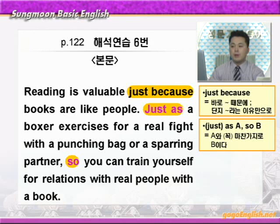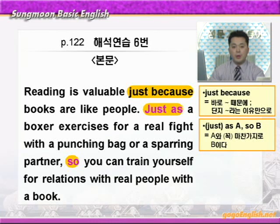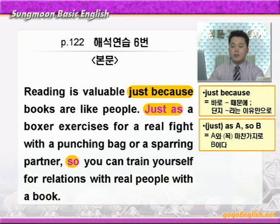'with a punching bag or a sparring partner' — punching bag은 샌드백 이런 뜻이고, sparring partner는 권투할 때의 연습 상대 다시 말해 우리가 말하는 스파링 파트너를 말하겠죠. 그러니까 권투선수가 punching bag 혹은 sparring partner와 함께 실제 시합을 위해 연습하는 것과 꼭 마찬가지로, 'so you can train yourself' — 당신은 당신 자신을 훈련시킬 수 있다. 여기 so는 앞에 just as와 상관적으로 쓰인 접속사가 되겠습니다. 'for relations with live people, with a book' — 책을 가지고 실제 사람들과의 관계를 위해 당신 자신을 훈련시킬 수 있다.